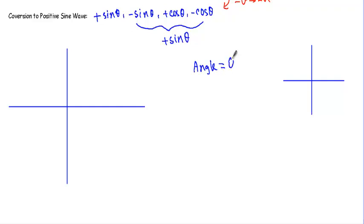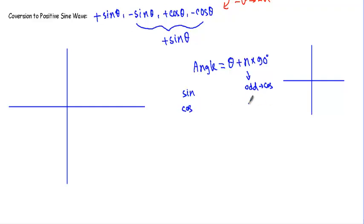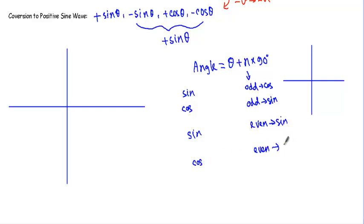We use the angle in the form theta plus n times 90 degrees. When n is odd, a sine function becomes cosine and a cosine function becomes sine. When n is even, sine remains sine and cosine remains cosine. Additionally, in the four-quadrant system: in the first quadrant all trigonometric functions are positive, in the second only sine is positive, in the third only tangent magnitude is positive, and in the fourth only cosine is positive.